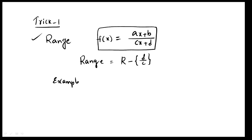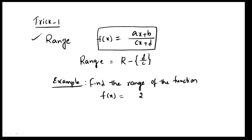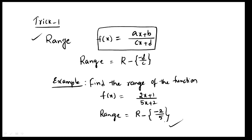Let's look at an example. Find the range of the function f(x) = (2x + 1) / (5x + 2). Using the formula for f(x) = (ax + b) / (cx + d), the range is equal to real numbers minus {-d/c}. Here d = 2 and c = 5, so range = ℝ minus {-2/5}.